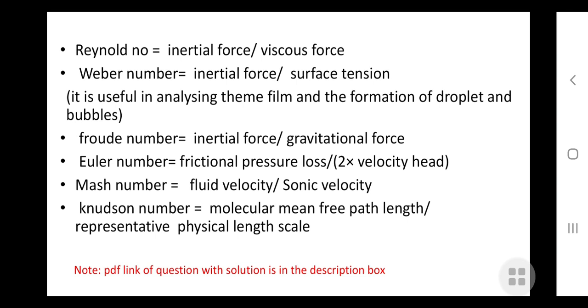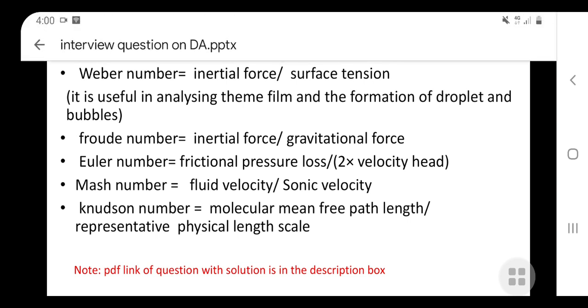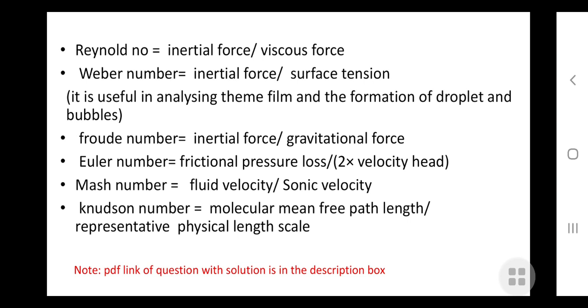Apart from these, there are many other dimensionless numbers like Prandtl number, Nusselt number, and Biot number for heat transfer. There are also dimensionless numbers for mass transfer. Different numbers have different significance in heat and mass transfer, following Fourier's law.